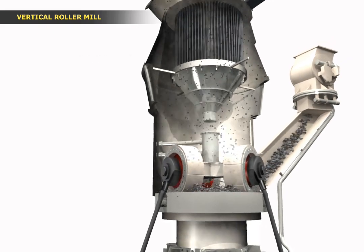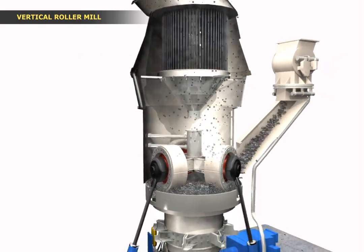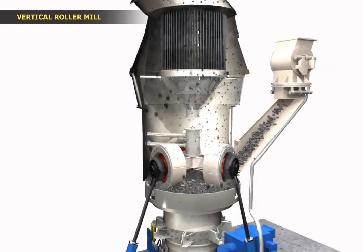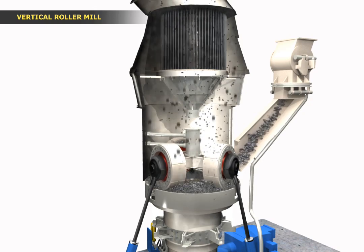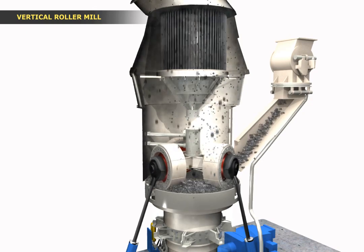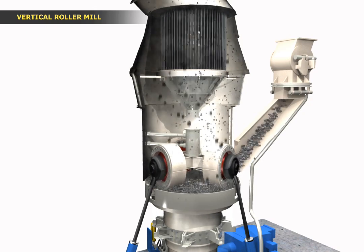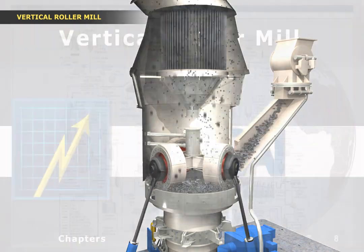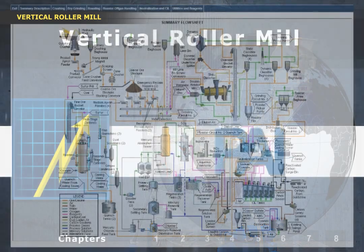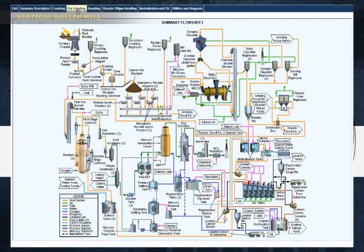How coarse or oversized material is directed back down onto the table for further grinding, and how sufficiently ground finer material continues up through the classifier and out of the mill.